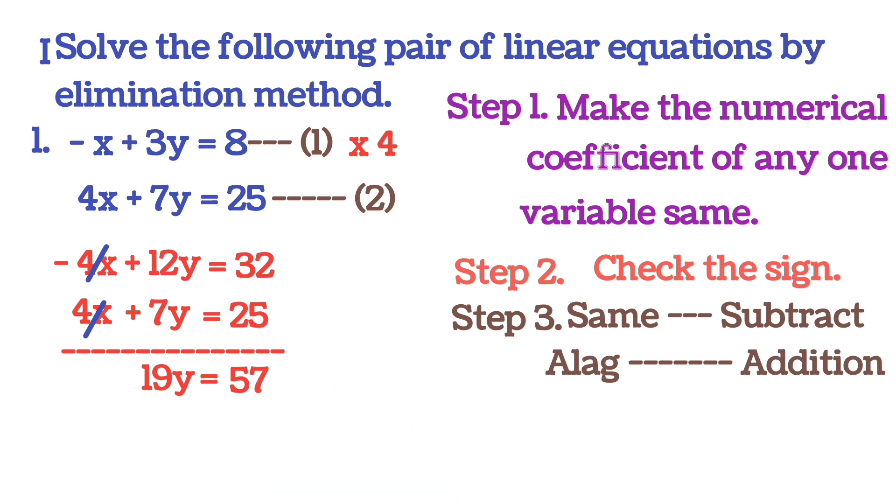From here easily we can find the value of y. So we will do that y = 57/19. Then we will say the table of 19, and when 57 comes? 19 threes are 57. So you cut both the numbers and you will get the value of y is 3.